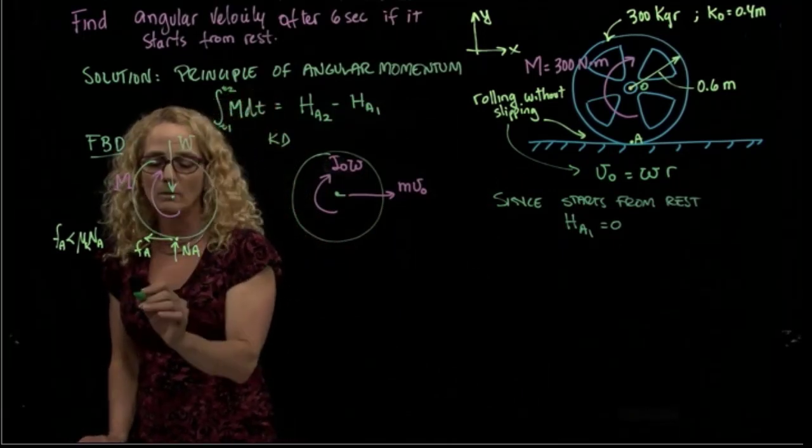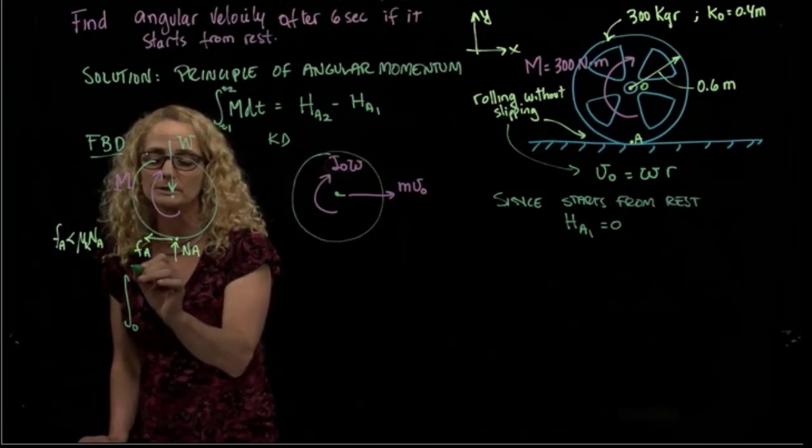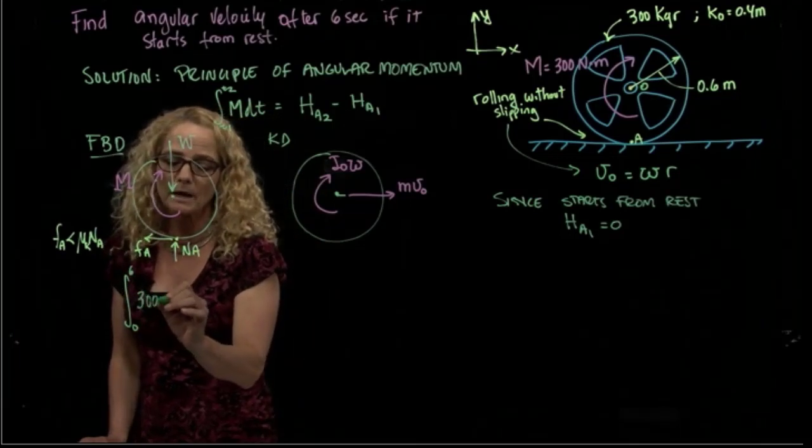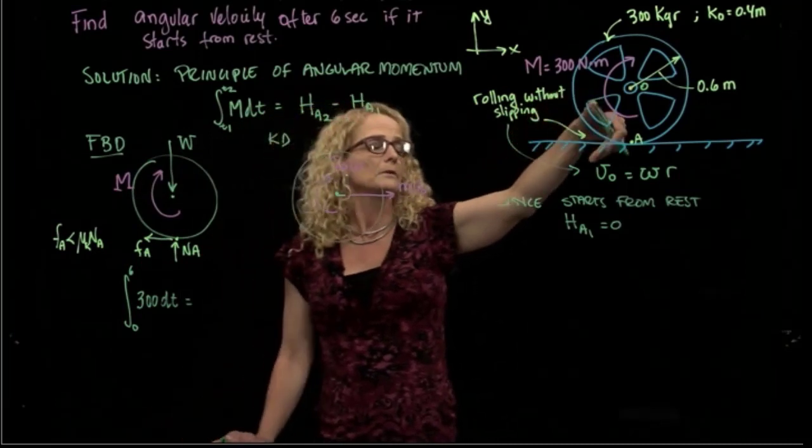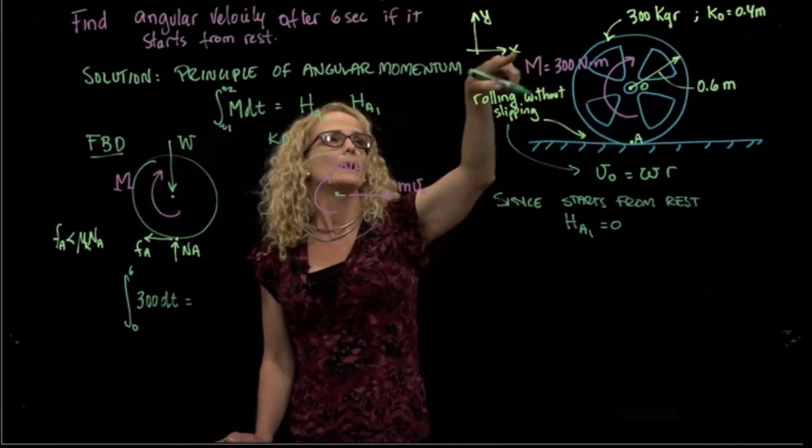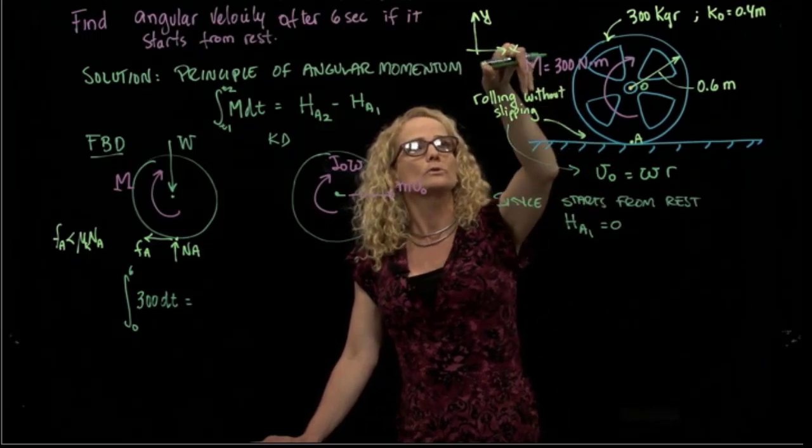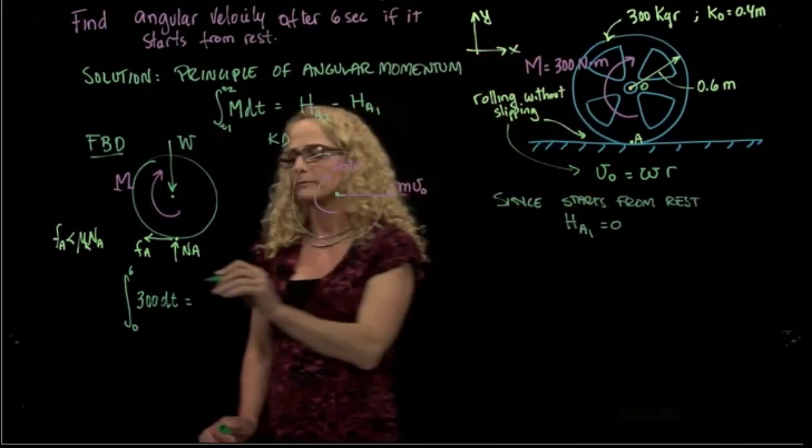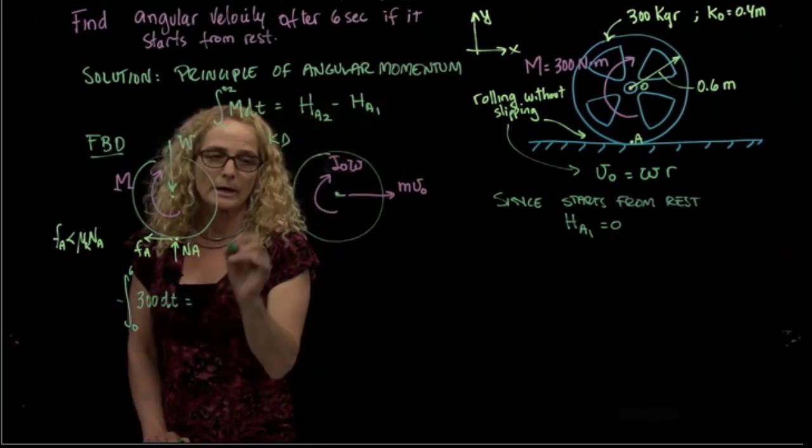Let's apply the equation. We will have the integral from zero to t_2, which is six seconds, of the moment 300 dt equals... This is a negative moment because I have placed my coordinate system as x and y, so this goes towards inside the board, so it's a negative value. That will be equal to H_A2.